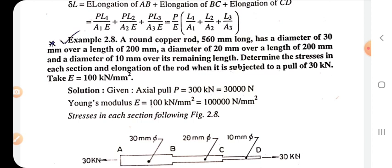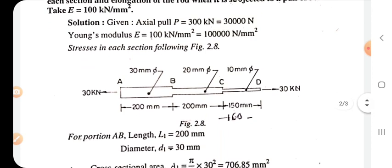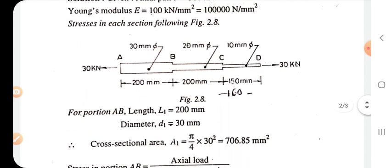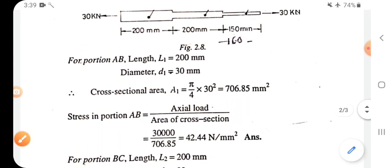Solution: Given data - axial pull P = 300 kN = 30,000 N. Young's modulus E = 100 kN/mm² = 100,000 N/mm². This is the picture.